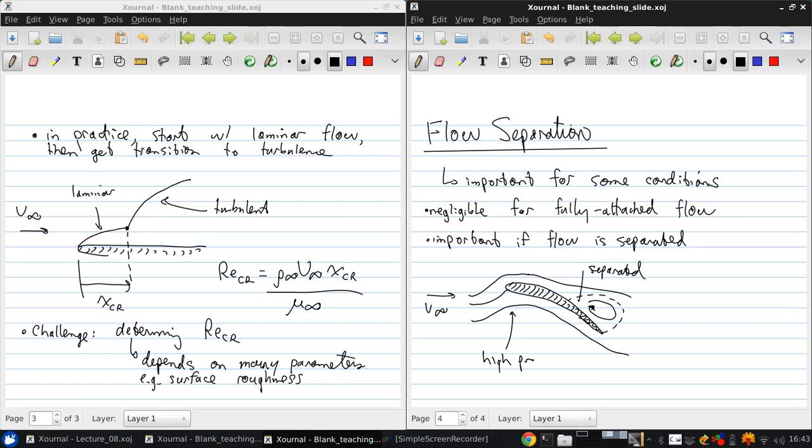it's like this airfoil has grown a big wart on the back of it. In terms of the effect on the flow field, there will be a high pressure here and a low pressure in this separated region. The combination of these gives a net force in the flow direction, and a force in the flow direction is a pressure drag.